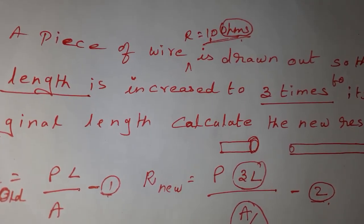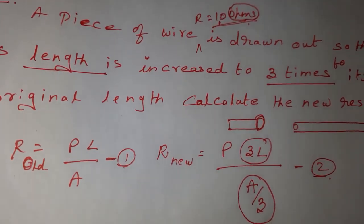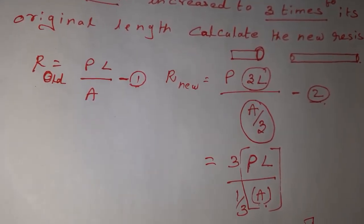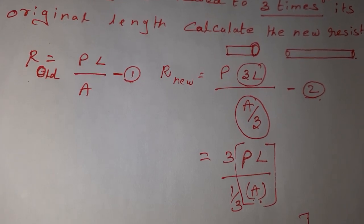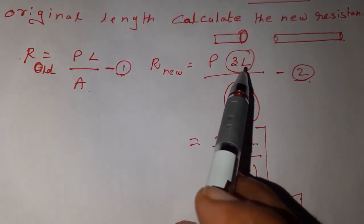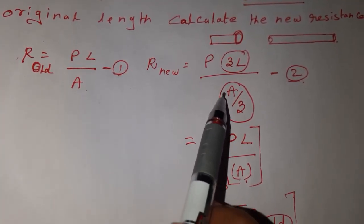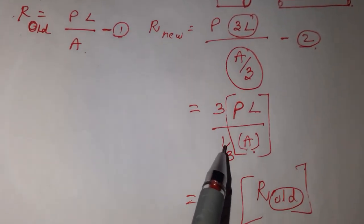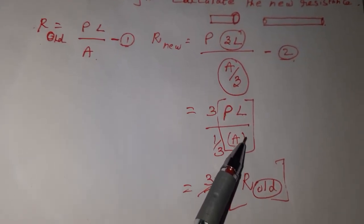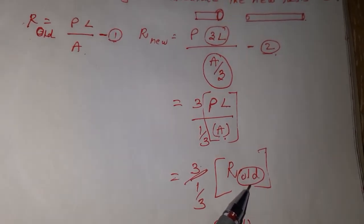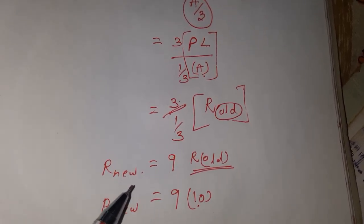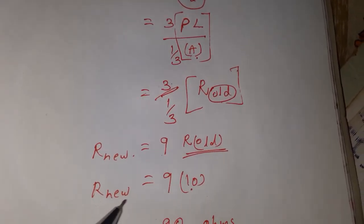To summarize: a piece of wire with resistance 10 ohms is drawn out to 3 times its original length. The old resistance is 10 ohms. Using R equals rho·L/A, we write R_old as the first equation. For R_new, length increases 3 times and area simultaneously decreases 3 times. Bringing the numbers outside and keeping rho·L/A, we substitute equation 1 as R_old. The denominator rises up and multiplies, giving R_new equals 9 times R_old equals 9 into 10, which is 90 ohms.